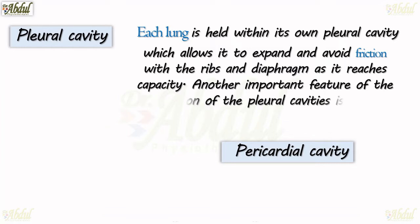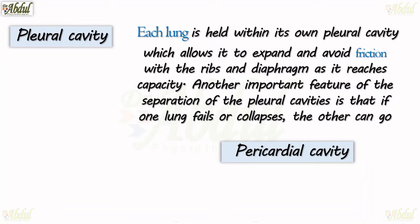Another important feature of the separation of the pleural cavities is that if one lung fails or collapses, the other can go on functioning. So these are the two important functions of the pleural cavity, and each lung is held within its own pleural cavity.